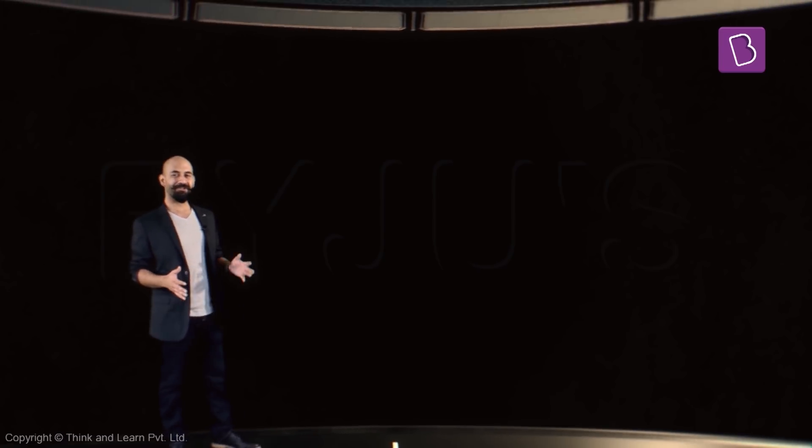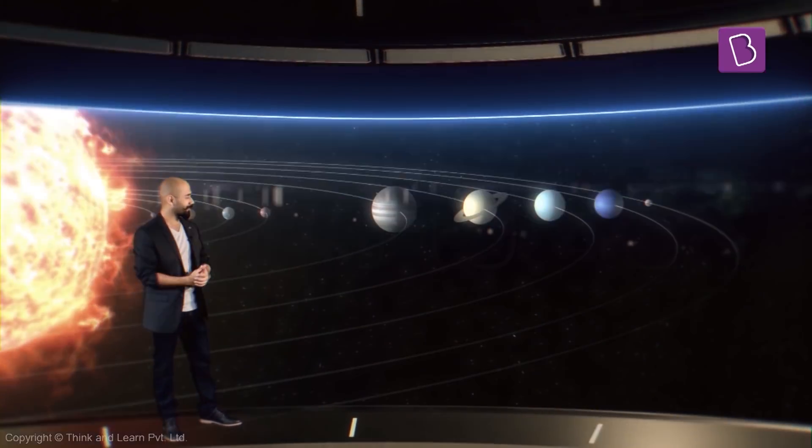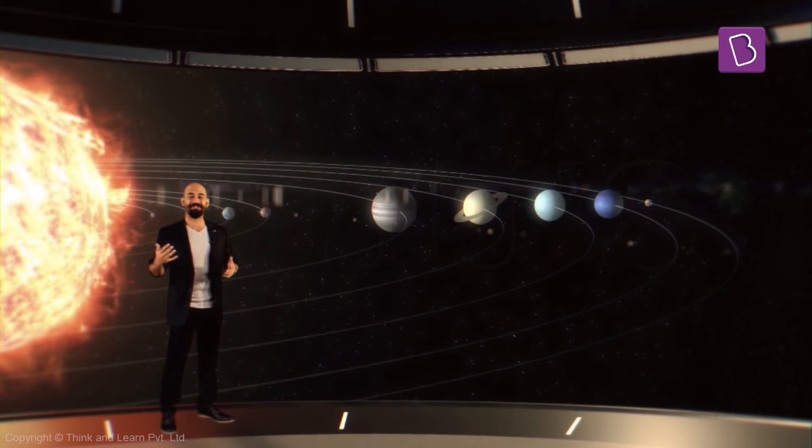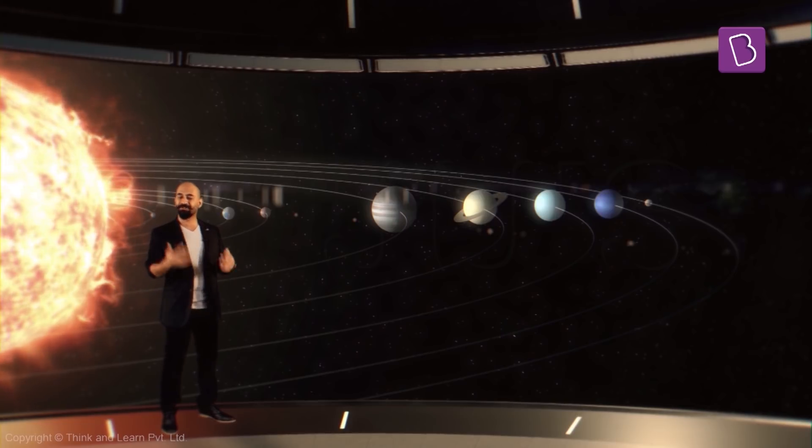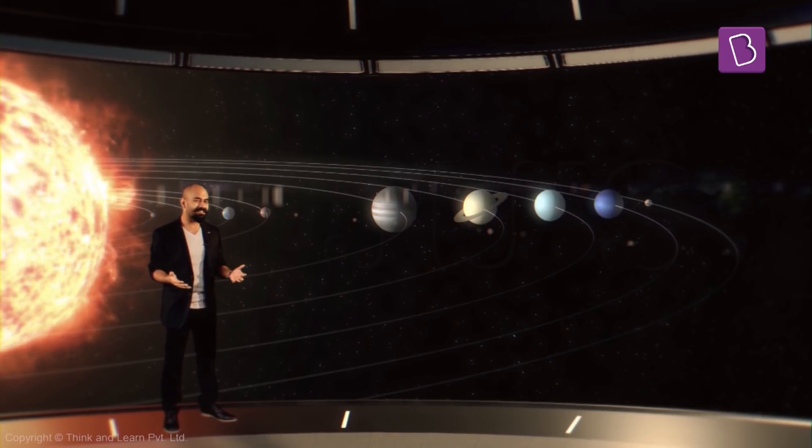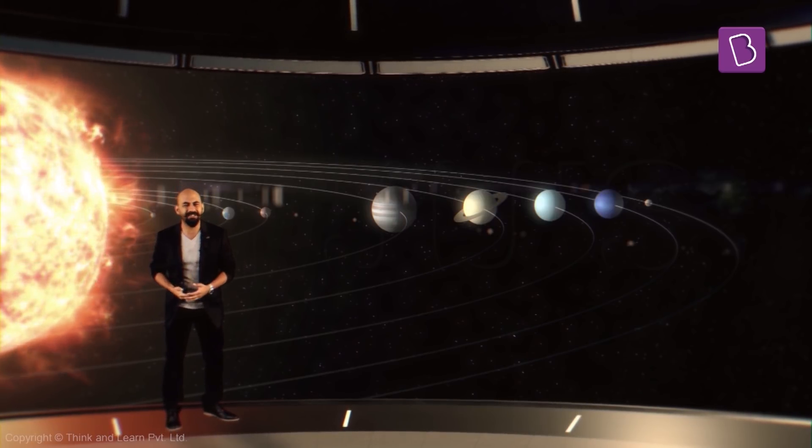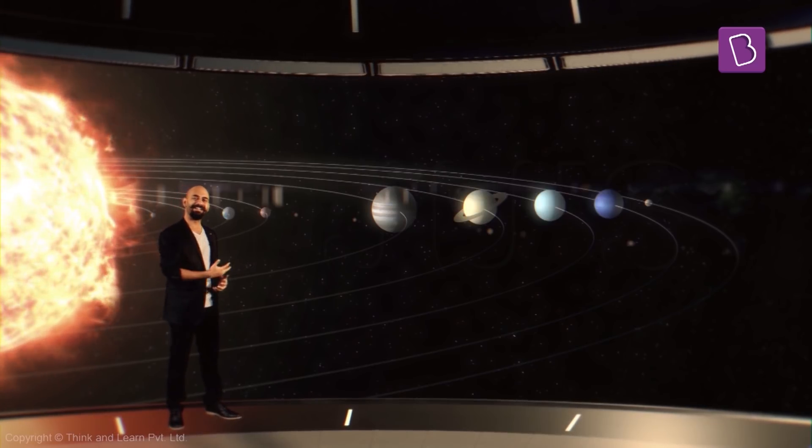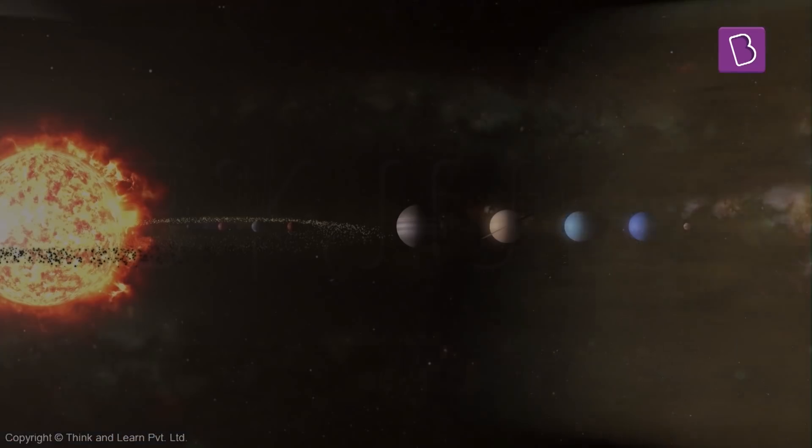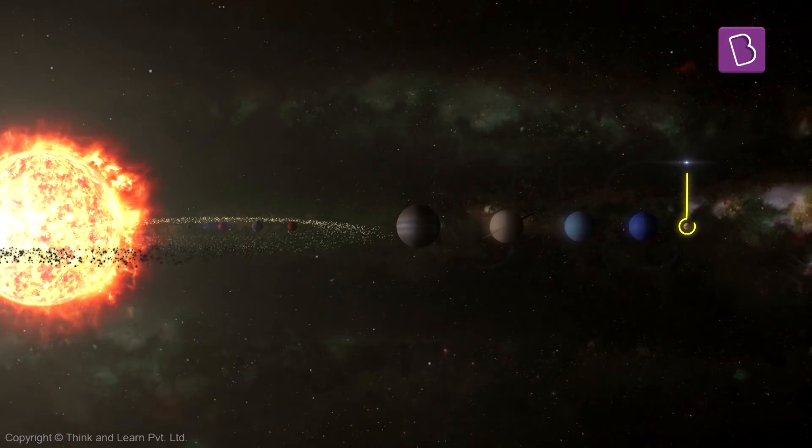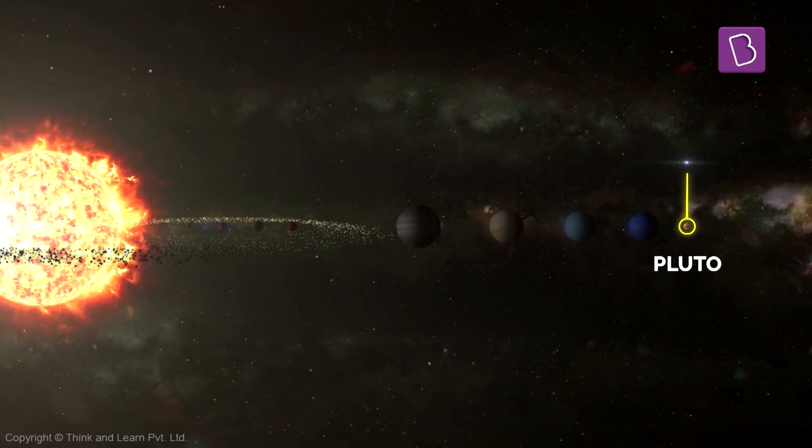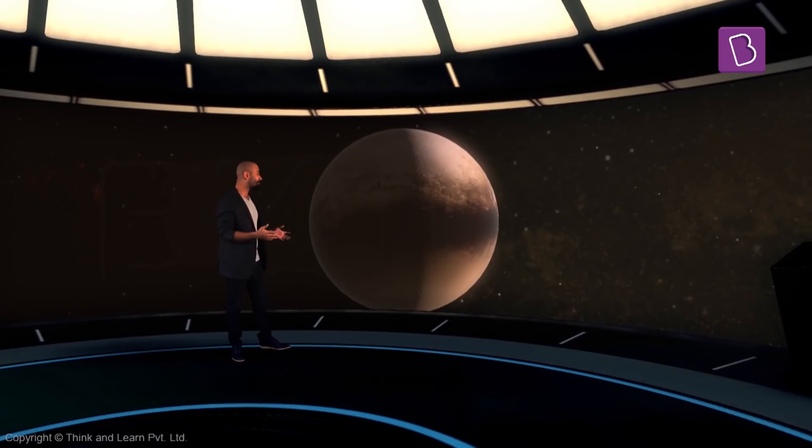Our solar system consists of the Sun, the planets, the dwarf planets, satellites, meteorites, comets, asteroids, and everything that goes around the Sun. Let's go to one of the dwarf planets, Pluto.